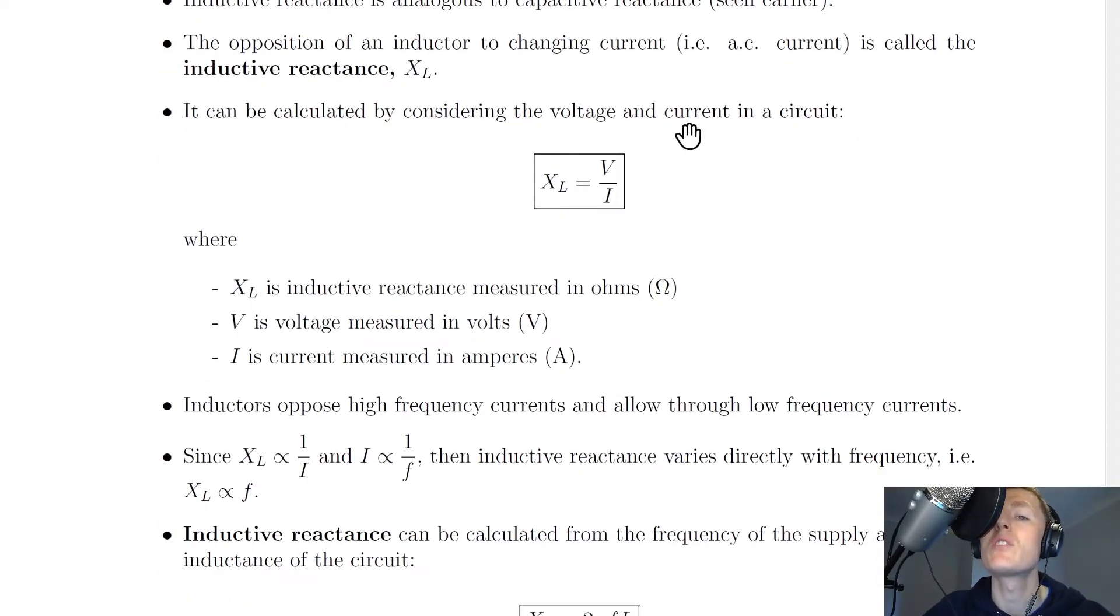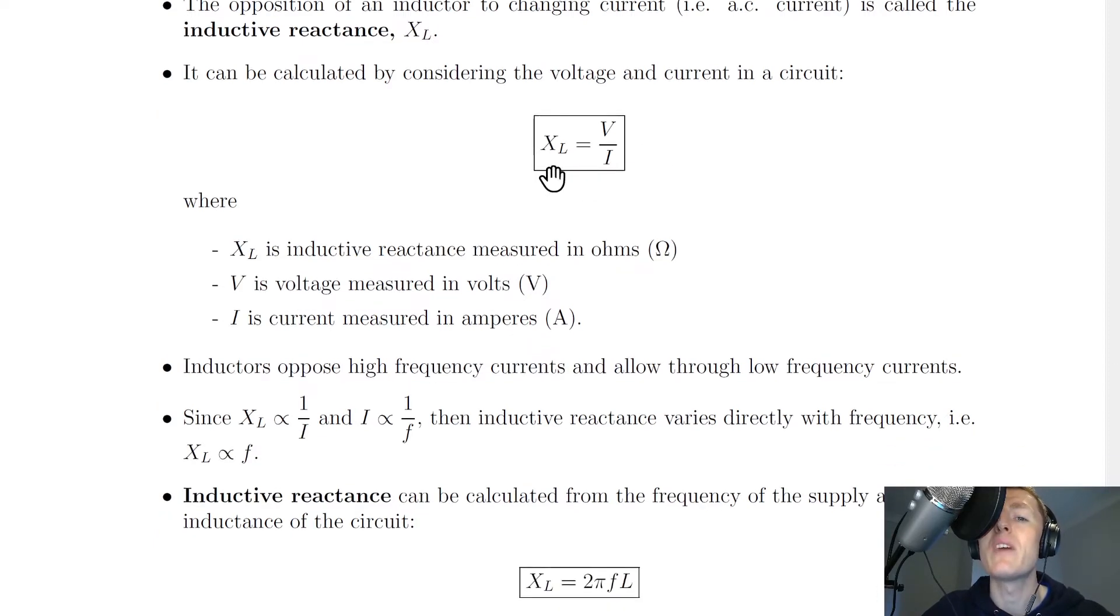It can be calculated by considering the voltage and current in a circuit, so we have XL equals V over I, where XL is inductive reactance measured in ohms, V is voltage measured in volts, and I is current measured in amps.